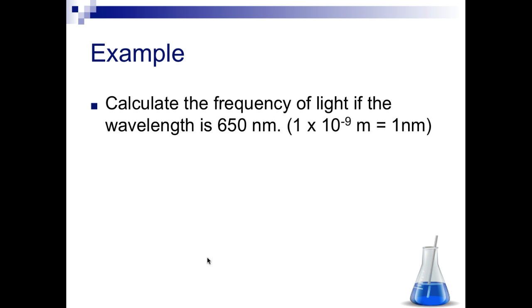Let's look at a different example. Calculate the frequency of light if the wavelength is 650 nanometers. And since this is in nanometers, and the speed of light is in meters per second, we need to do a conversion first. So we need to convert 650 nanometers to meters. So I told you how many meters are in 1 nanometer, so we're going to set this up. 650 nanometers is going to be multiplied by 1.0 times 10 to the minus 9th meters to get 6.50 times 10 to the minus 7th meters.